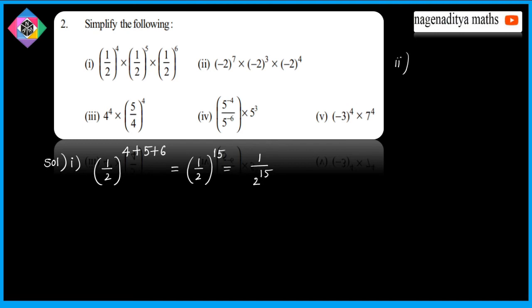Since the base is the same and the exponents are equal, we add the powers: 7 + 3 = 10, and 10 + 4 = 14. So the result is 2^14.